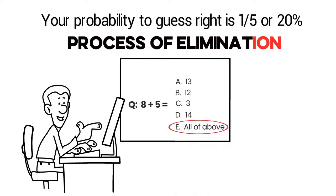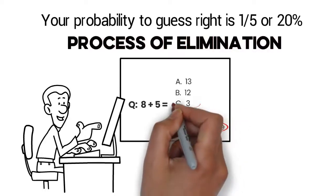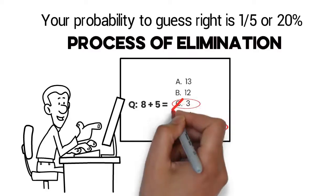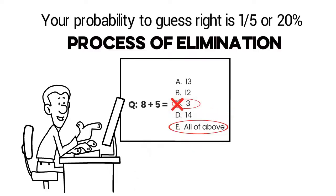Now through the process of elimination, you find out that one of the answers is not correct. If you know for sure one of the answers is incorrect, you know you can also eliminate the all of the above option as well.